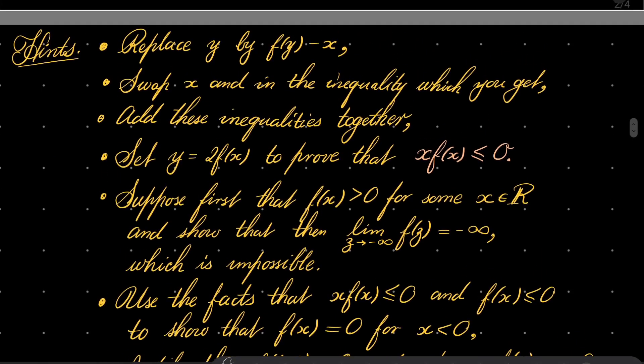First, take our functional inequality and replace y by f of y minus x, and then you should get some inequality. Try swapping x and y in this inequality, and after adding them together, set y to be two times f of x to prove this crucial inequality: x times f of x is less than or equal to zero for every real number x.